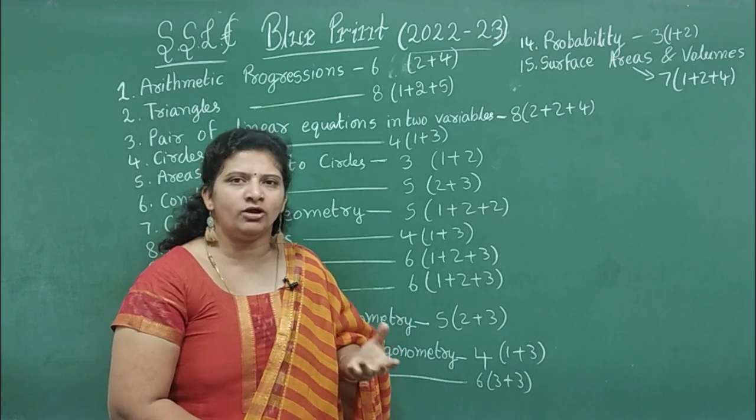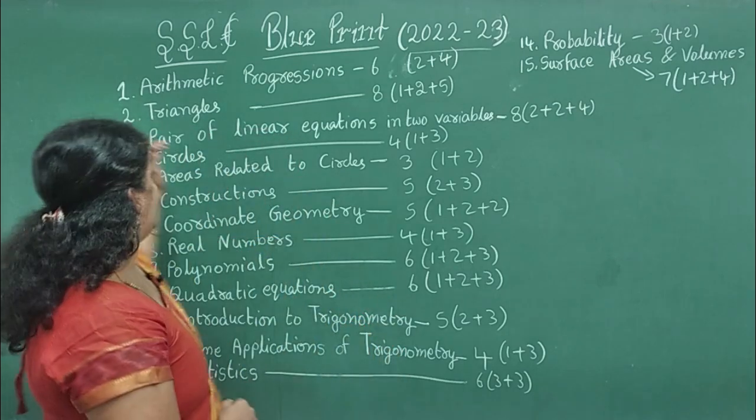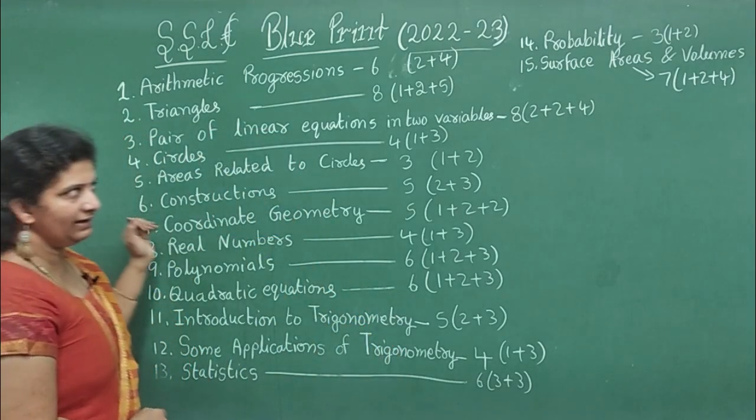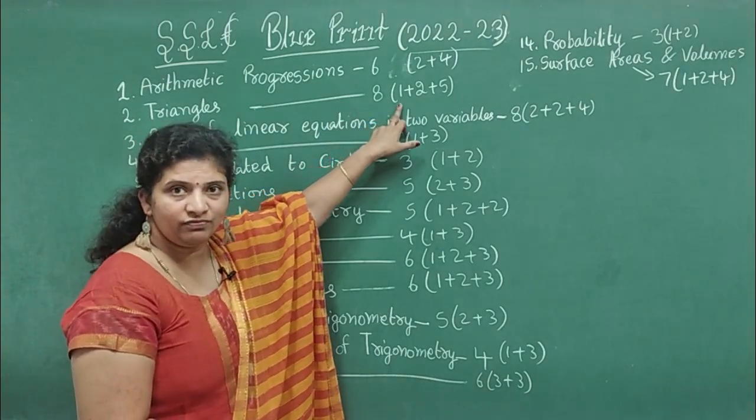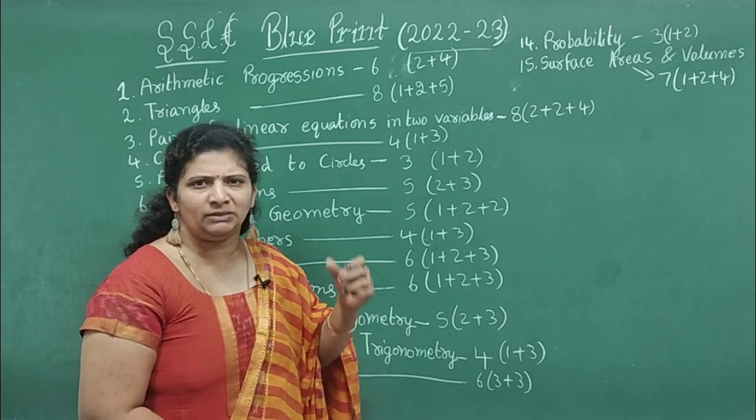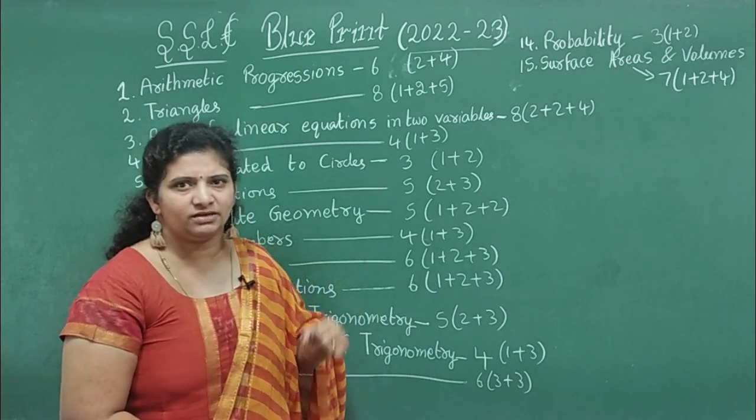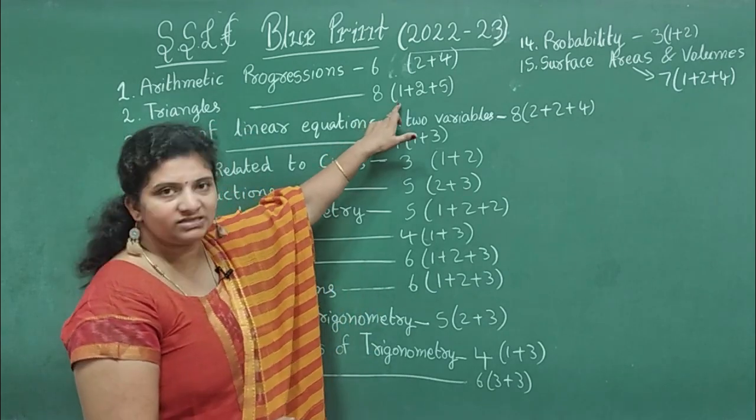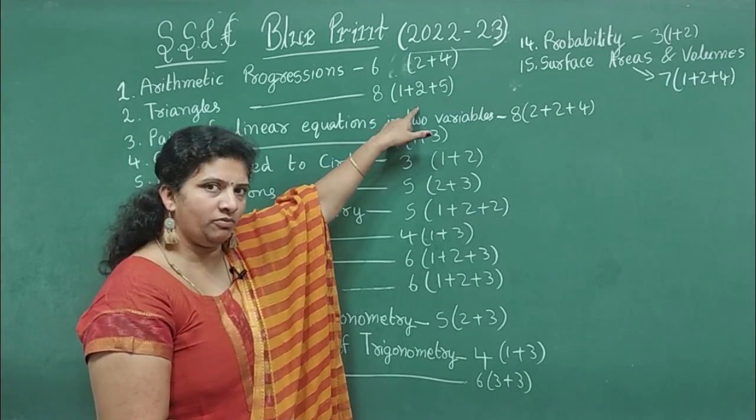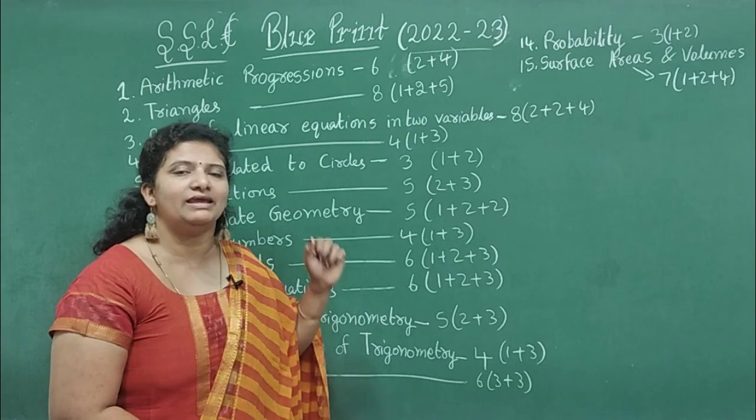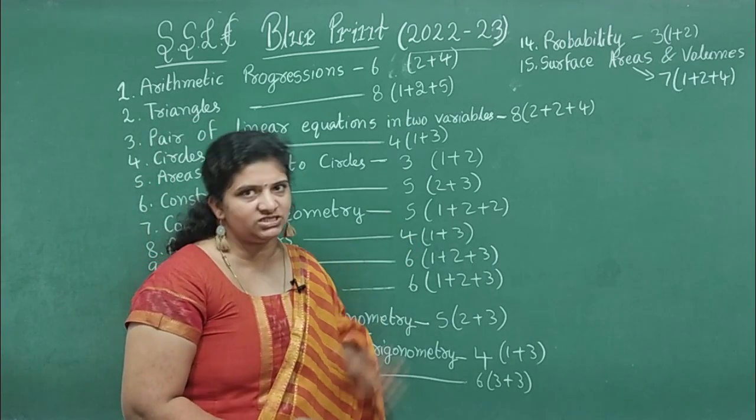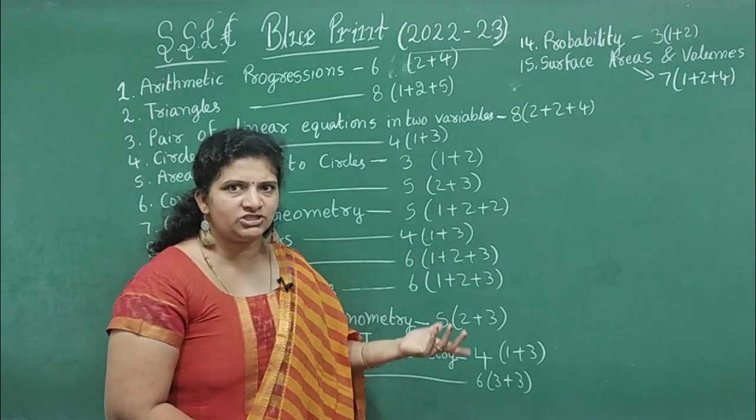Second chapter, Triangles - 8 marks weightage. We may get 1 mark for statement, either BPT statement or Pythagoras theorem. Two marks one problem, and 5 marks theorem. 95% we can expect 5 marks theorem from this chapter, sometimes it may change to other chapter also.